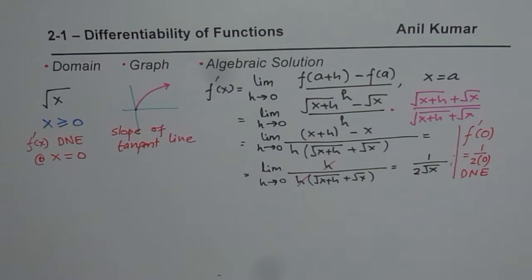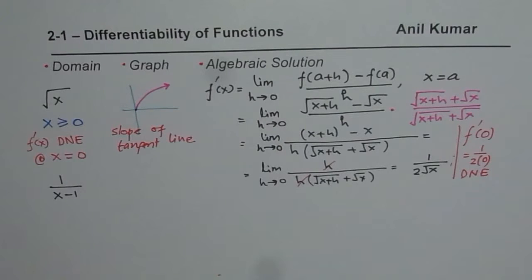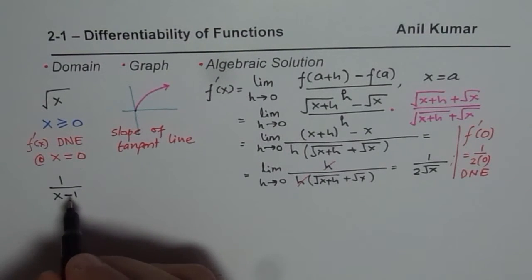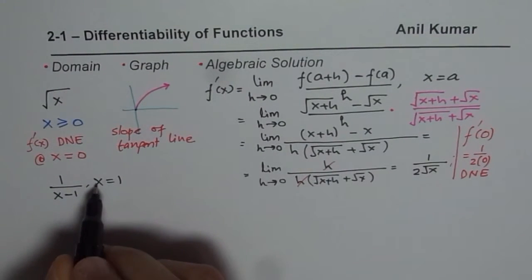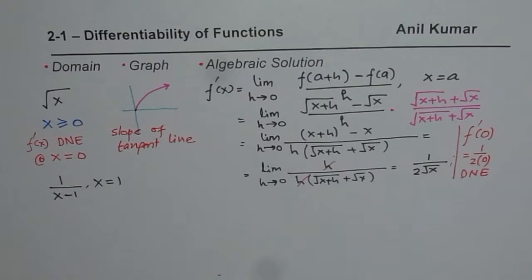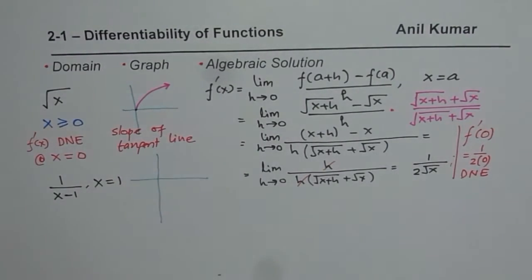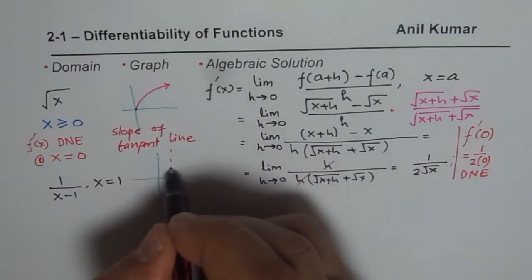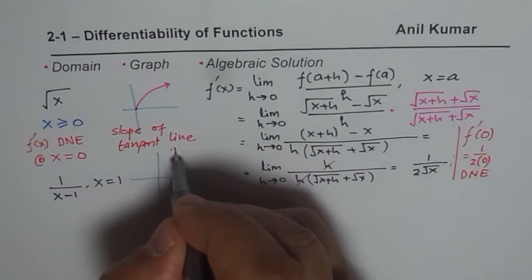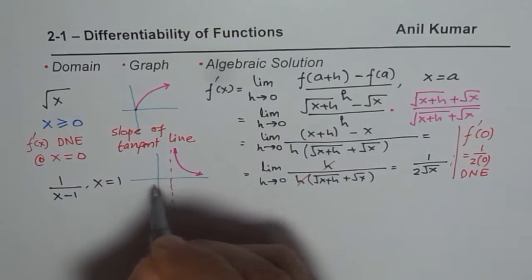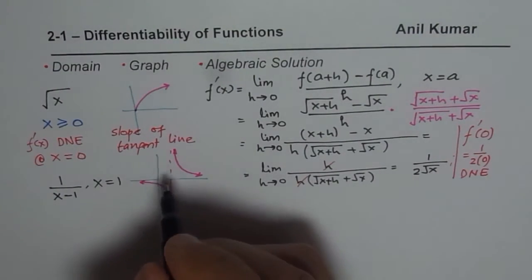Similarly, consider the function 1 over (x minus 1). We know that the domain does not include x equals 1, because if x equals 1, it becomes 1 over 0. If I sketch a graph of this function, I get a function with a discontinuity at x equals 1.